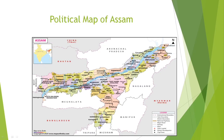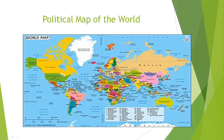A political map shows boundaries — district boundaries, state boundaries, and international boundaries. For example, on a political map of India you can see the Kokrajhar district boundary. On the world's political map you can see countries like India, China, Kazakhstan, Australia, Canada, and America, each with their boundaries.